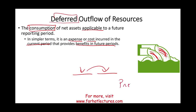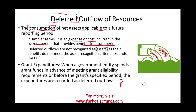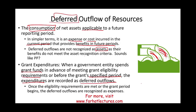This sounds like a prepaid. Deferred outflows are not recognized as assets because their benefit does not meet the definition of an asset, but we list them with the assets. An example is grant expenditure. When the government entity spends grant funds in advance of meeting grant eligibility — whether a specified period or some requirement — the expenditure is recorded as a deferred outflow of resources. Once eligibility is met, the deferred outflow will be recognized as expenditure.